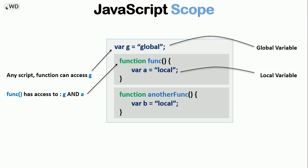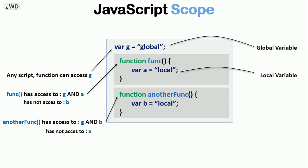But let's say we have another function called 'anotherFang' and we set the variable b equals 'local'. This function has access to the global variable g and its own local variable b. So both 'fang' and 'anotherFang' can change the value of g, the global variable.